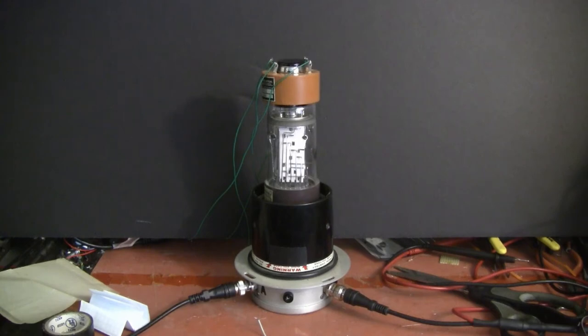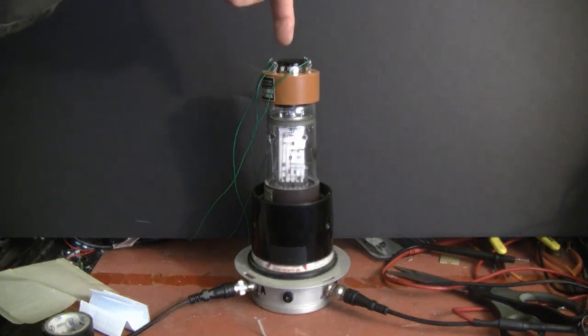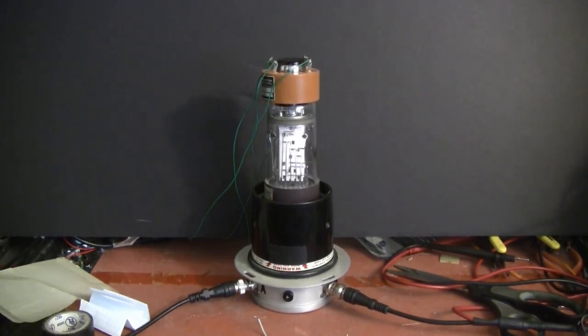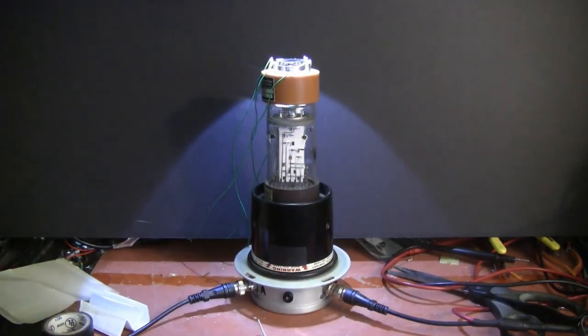For an image source, I have a piece of a photographic slide just lying on top of the photocathode. To get the picture that you see on the oscilloscope, I shine my flashlight through the top of that slide.